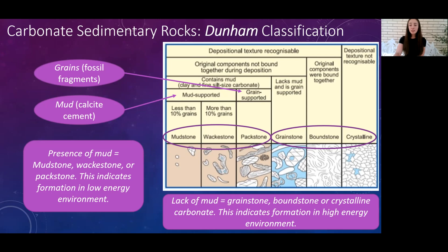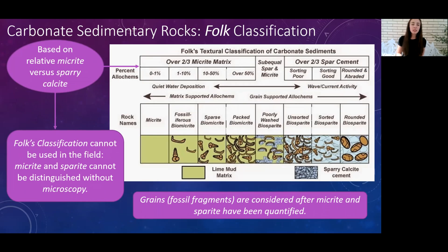Folk's classification is more detailed but requires a microscope, making it unsuitable for field use. It is based on relative micrite versus sparite composition. Micrite is a fine-grained carbonate mud matrix or cement that forms in low-energy environments, whereas sparite is a coarser-grained calcitic cement that forms due to alteration of the original micrite in higher-energy environments — typically indicating recrystallization. Grains (fossil fragments) and their abundances are considered after determining relative micrite and sparite concentrations, allowing further classification using Folk's scheme.